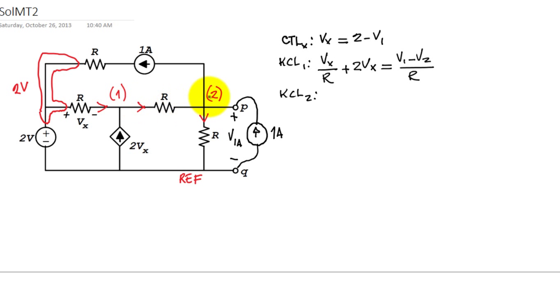This one. V1 minus V2 over R. It is an R branch after all. The same current that we wrote before. Plus a 1 amp current. And that is equal to the current leaving. That is V2 over R. V2 minus 0 over R. Voltage of the origin minus voltage of the destination over R. And this is 1 amp. The top current source.